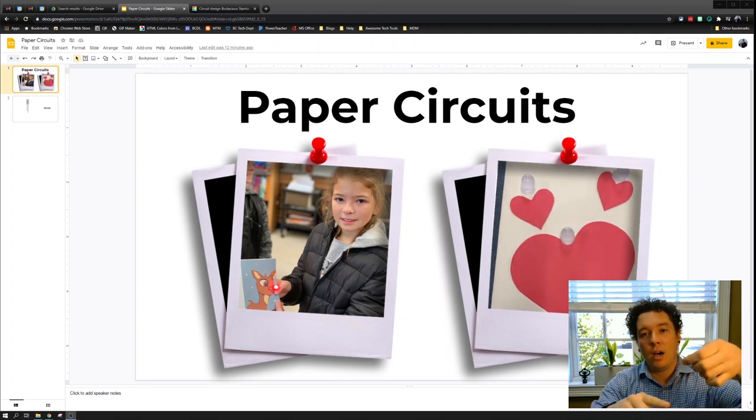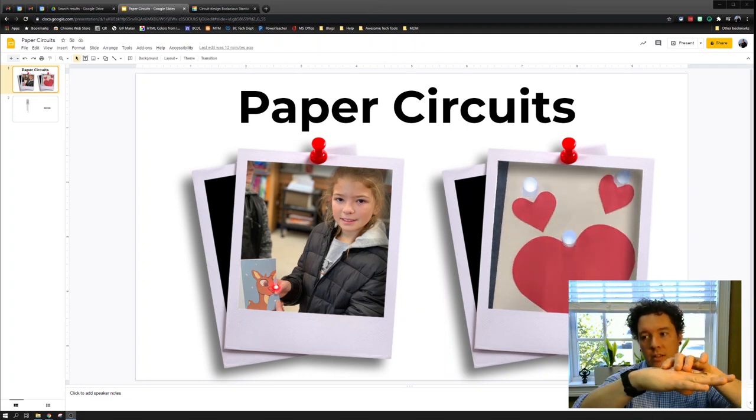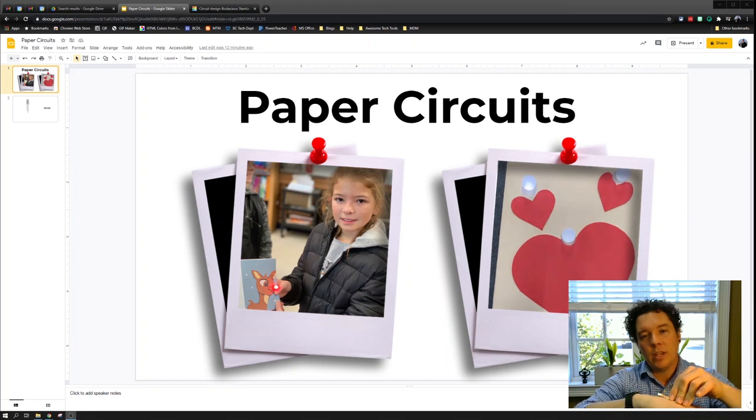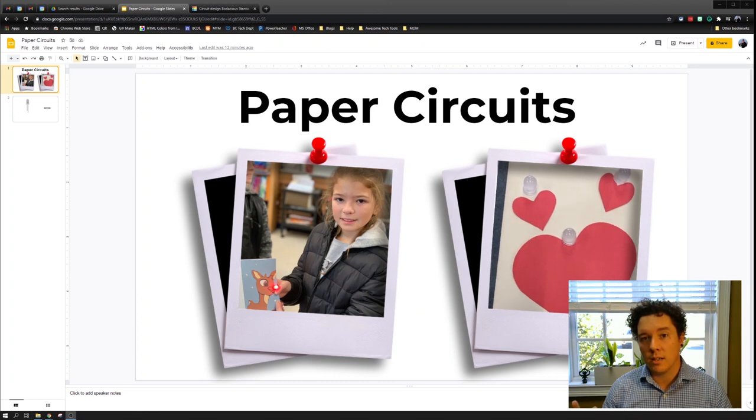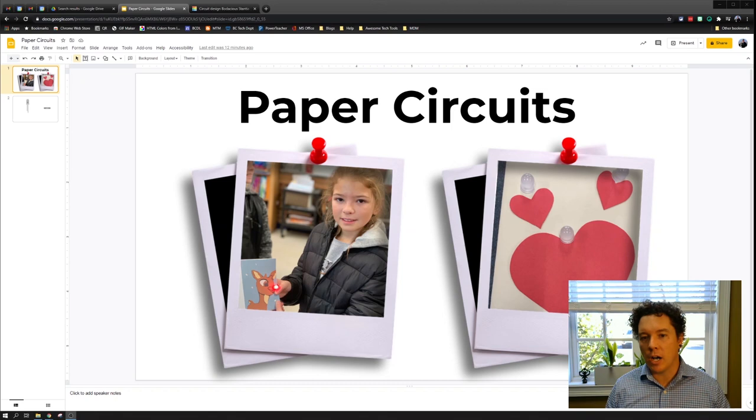If you put the tape on top of your LED, no electricity will get to your LED light. The LED light bulb leg needs to go on top of your copper tape to make a circuit. Let's go ahead and build one together. We'll start by folding our paper to make a card.